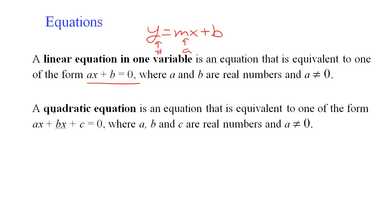Quadratic equations — there is a typo, there should be a little square — are of the form ax squared plus bx plus c. That is the general form, where a, b, and c are always real numbers and a cannot be zero. If a were zero you would just have b equals zero, which is meaningless, and if a equals zero in the quadratic form you get bx plus c — back to a linear equation. That is why a can't be zero.